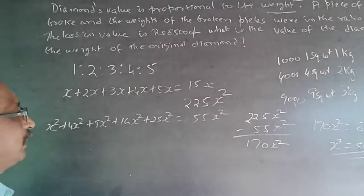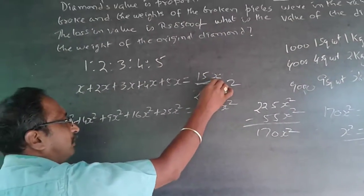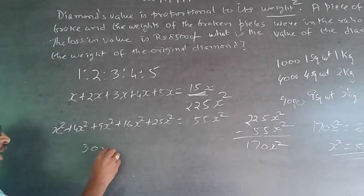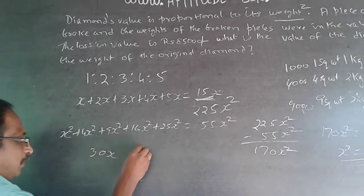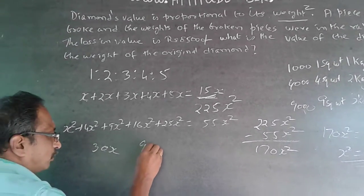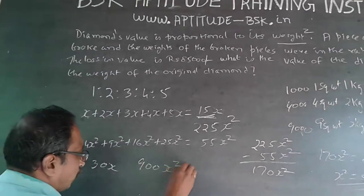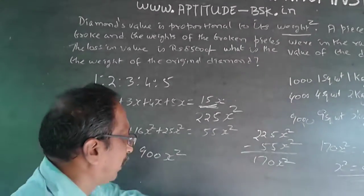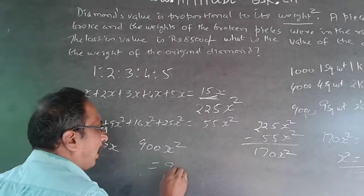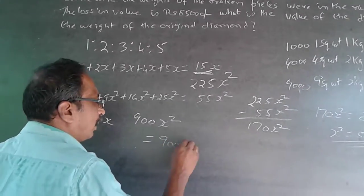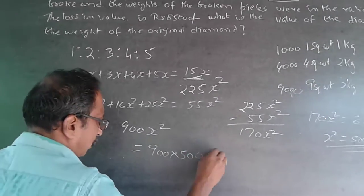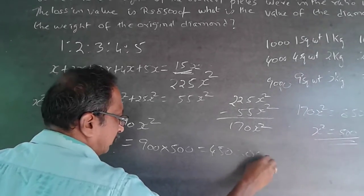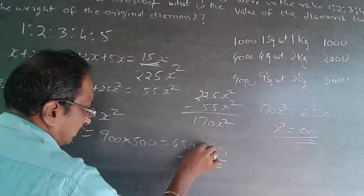The original diamond weighs 15x. Twice the weight will be 30x. Converting to square weight: (30x)² = 900x². If x² = 500, then 900x² = 900 × 500 = 4,50,000. The answer is Rs 4,50,000.